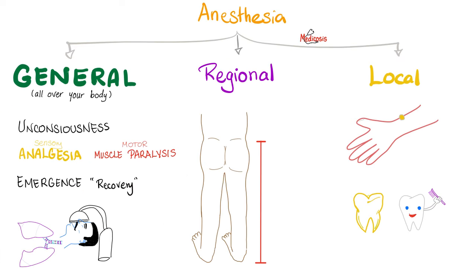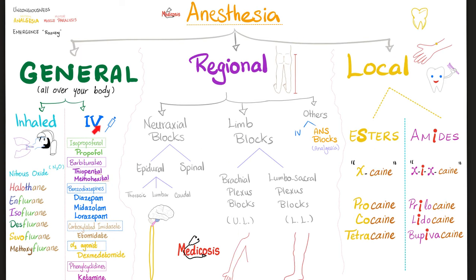Anesthesia is general, regional, or local. General is inhaled or IV. Regional is neuraxial, limb, or others. Local is ester or amides. You need to know every single word in this chart.